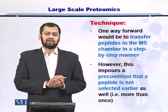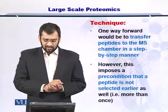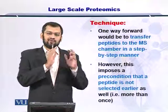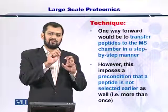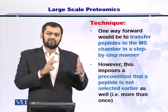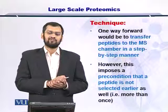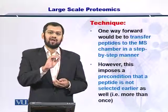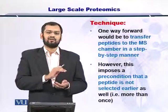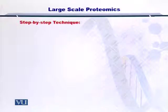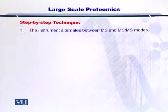In large-scale proteomics experiments, the technique involves transferring peptides into the mass spectrometer chamber and analyzing them one by one. The sample is injected and taken into the mass analysis chamber one at a time. If the number of peptides in the chamber is large, this will take a long time. However, automated processes now allow each peptide to be measured sequentially. This necessitates that one specific peptide is selected at a time and that the same peptide is not measured twice. The step-by-step procedure of the technique is as follows.